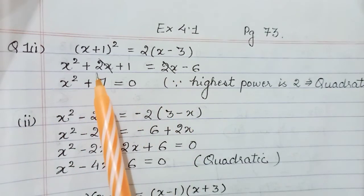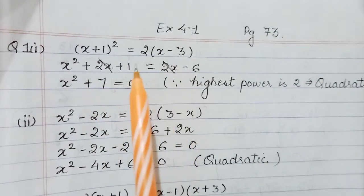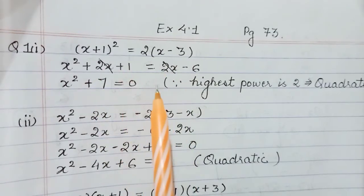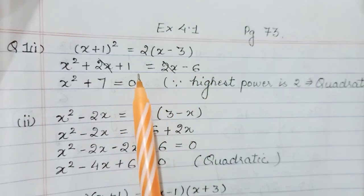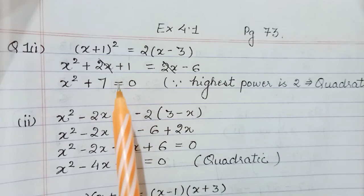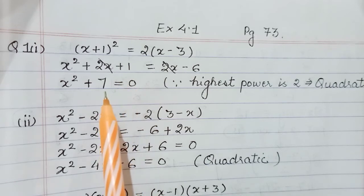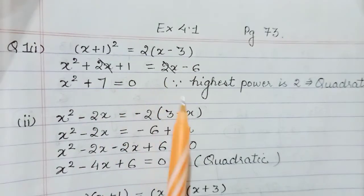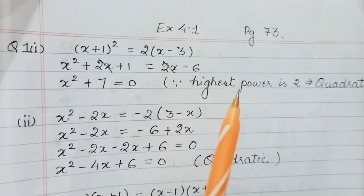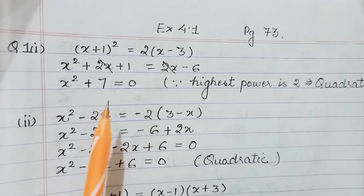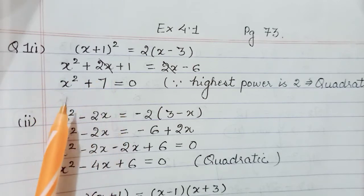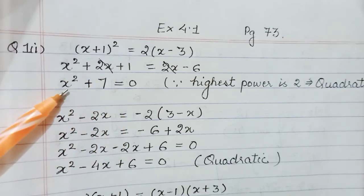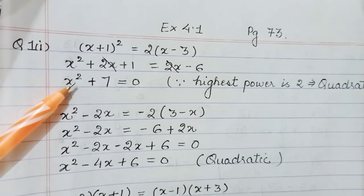The 2x terms on either side cancel out. The constant 6 moves across and 1 + 6 gives 7. After simplifying and collecting all unlike terms, the highest power of the variable is 2, so this equation is quadratic.